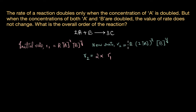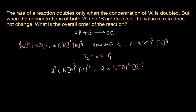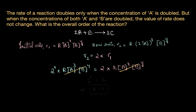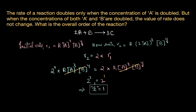Let's now substitute these equations. When we do that we get 2^X times K into A power X times B power Y is equal to 2 multiplied by K into A power X times B power Y. These two terms are exactly the same so we can cancel them out, and this gives us 2 power X is equal to 2, such that X is equal to 1. So the order of the reaction with respect to reactant A is 1.